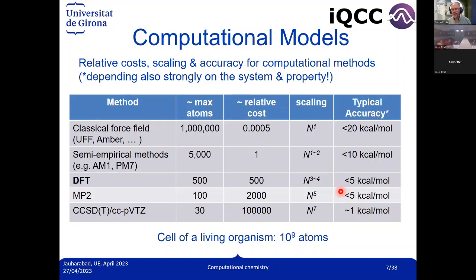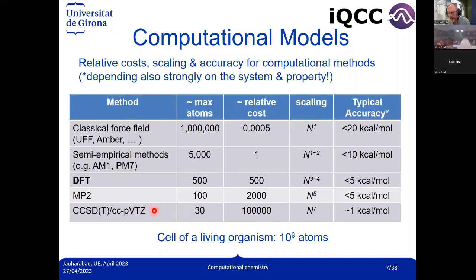It's a trade-off between accuracy and the size of the system — depending on the system size, you choose one method or another. To give an idea of scale: a cell of a living organism has about one million atoms. So we are far from being able to compute a whole cell with molecular mechanics, but we are moving in that direction and can already simulate a small organelle.